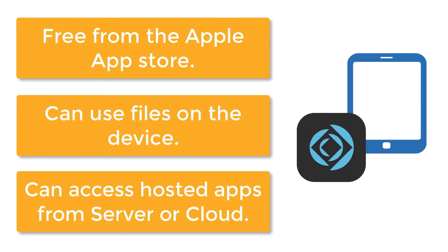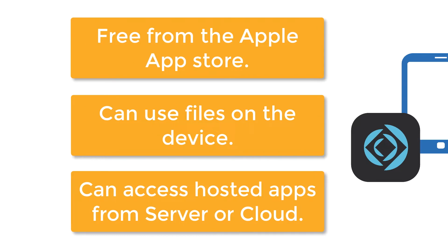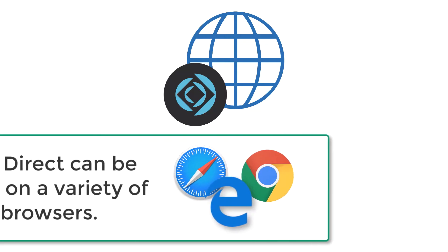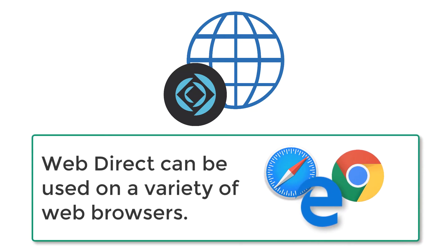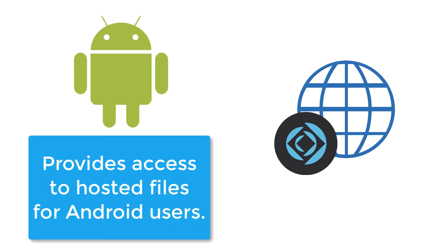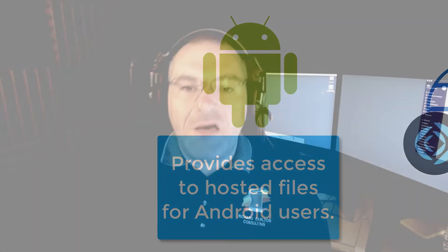So FileMaker Go is the dedicated client software for the iPhone and iPad. Additionally, there's a third client called FileMaker WebDirect. FileMaker WebDirect provides browser-level access to a FileMaker custom application and can be used on a wide variety of browsers. The interesting part about WebDirect is that it provides access to Android devices and other browsers where FileMaker Pro or Go won't run.